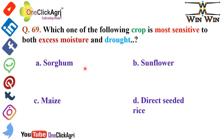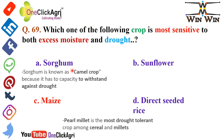Question 69: Which crop is most sensitive to both excess moisture and drought? The right answer is maize. With respect to sorghum, it is known as the camel crop because it has the capacity to withstand drought. Note: pearl millet is the most drought-tolerant crop among cereals and millets. Please remember this — it is very important.